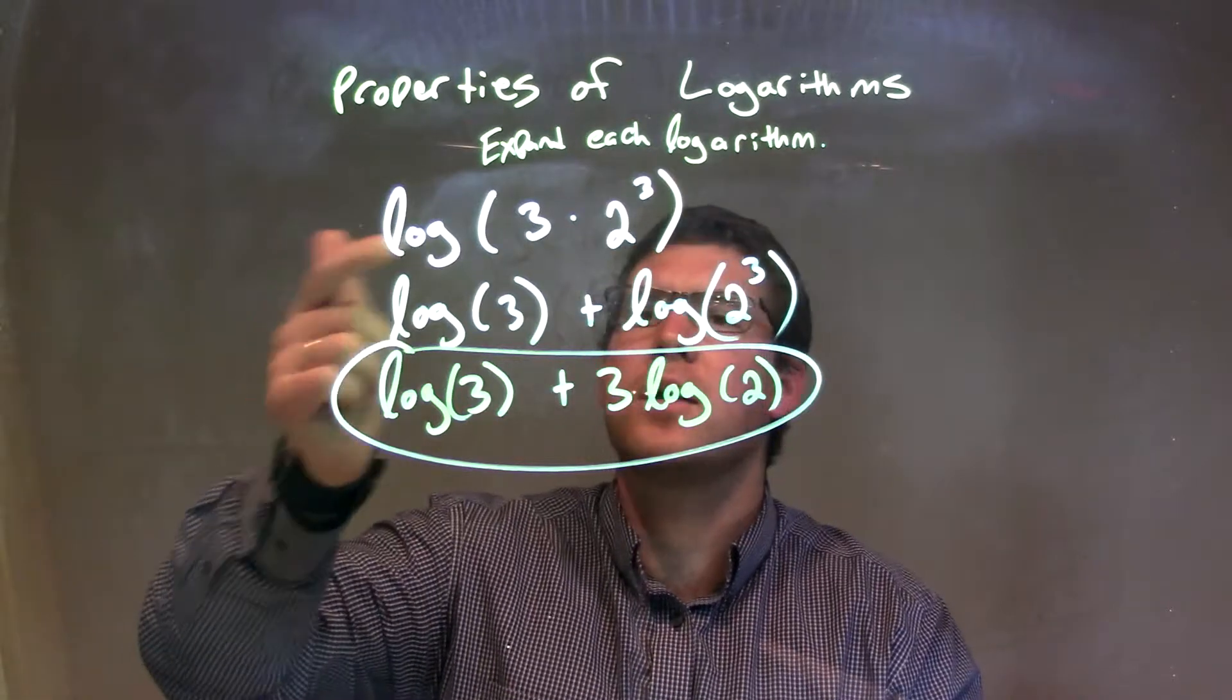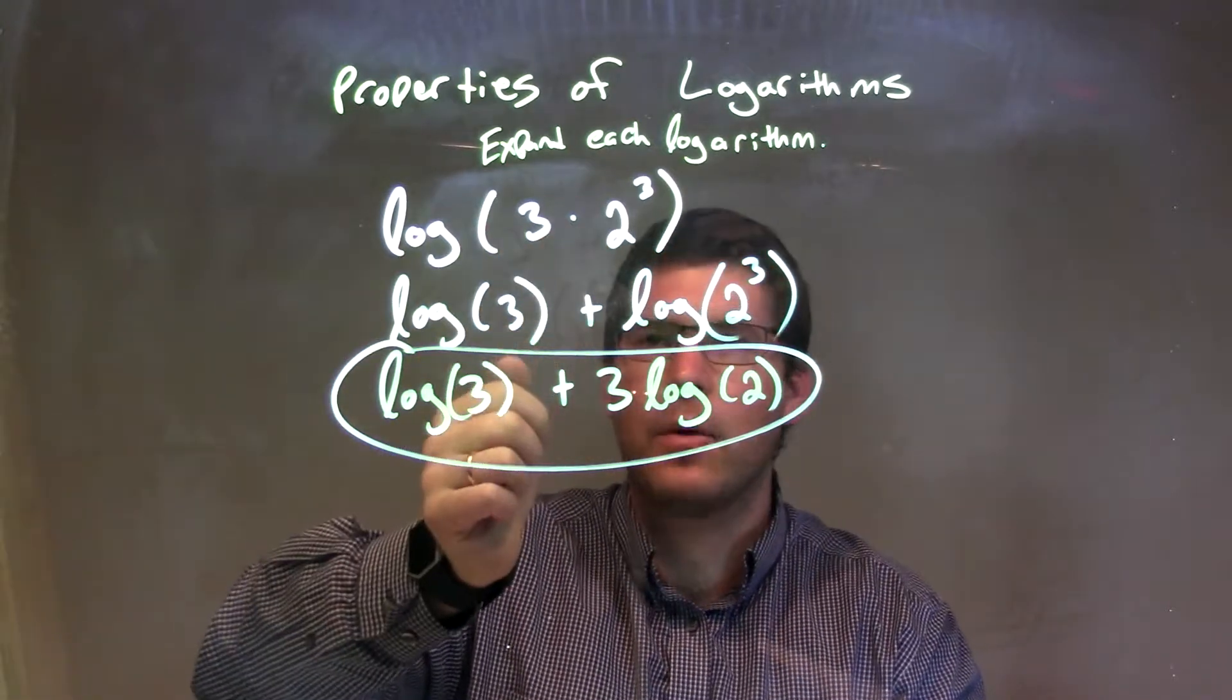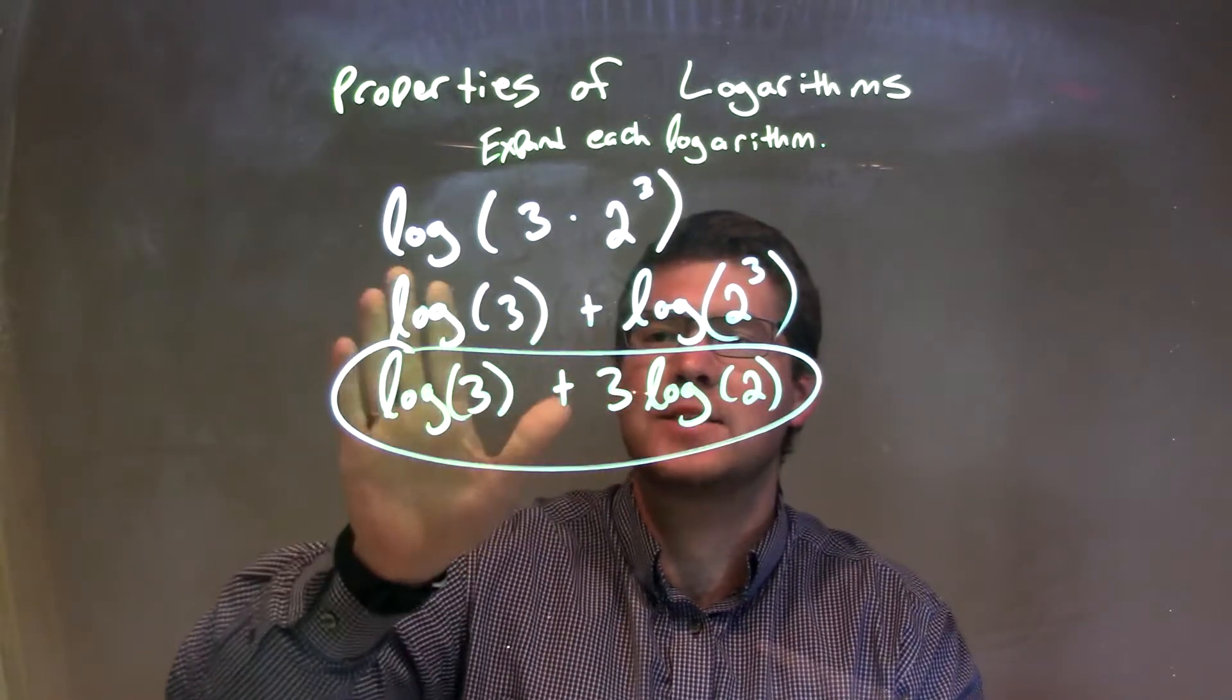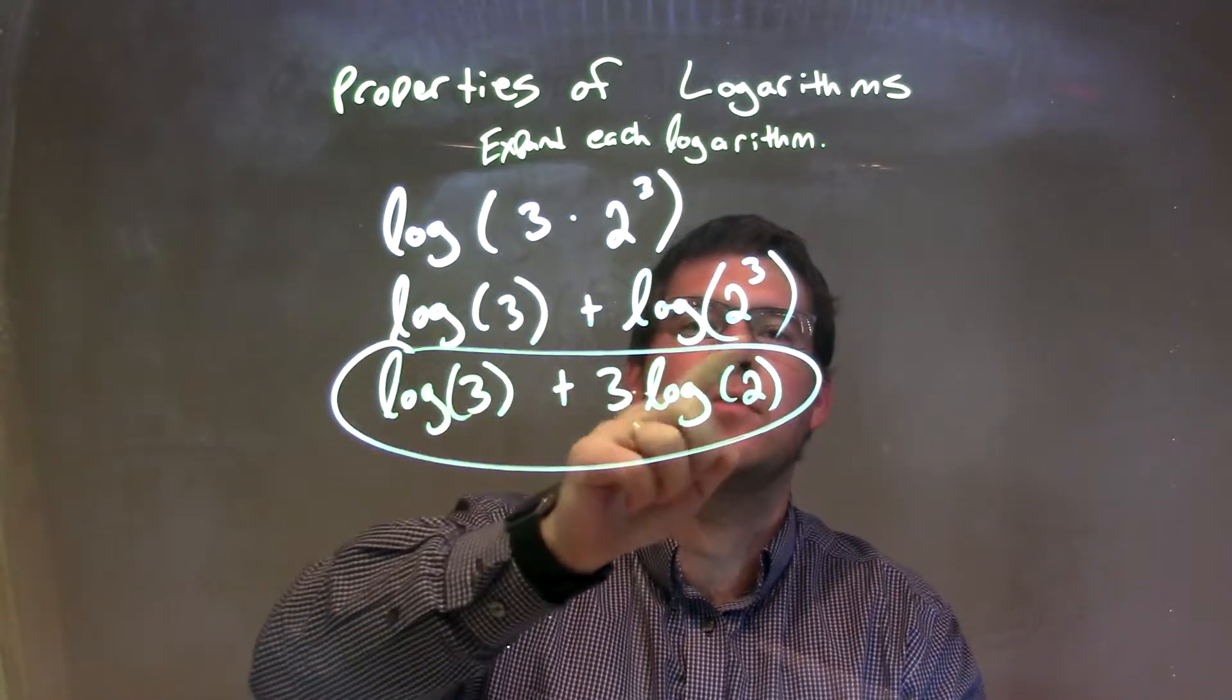So recap here. We have log of 3 times 2 to the third power. I can separate 3 and 2 to the third, and with addition I expanded it, so log of 3 plus log of 2 to the third.